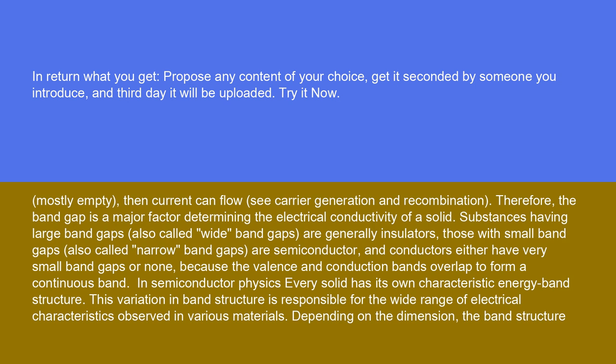Substances having large band gaps, also called wide band gaps, are generally insulators. Those with small band gaps, also called narrow band gaps, are semiconductors, and conductors either have very small band gaps or none because the valence and conduction bands overlap to form a continuous band.